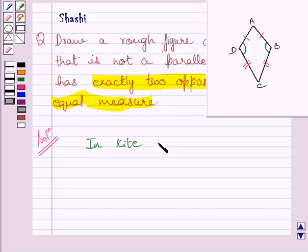So we can write in kite ABCD angle D is equal to angle B but angle A is not equal to angle C.